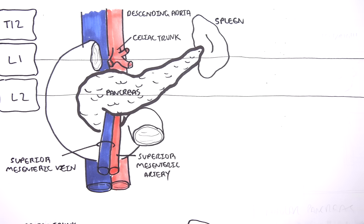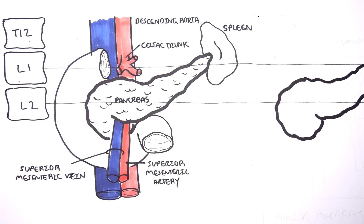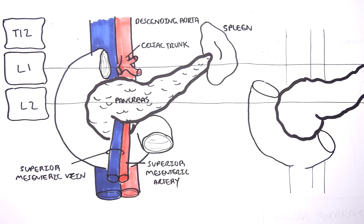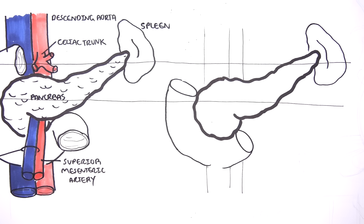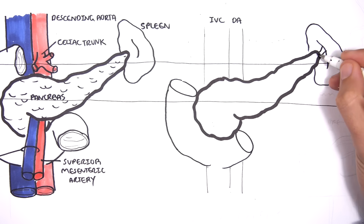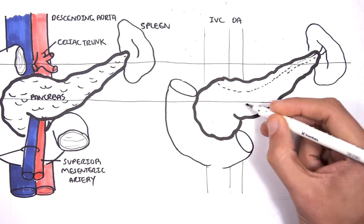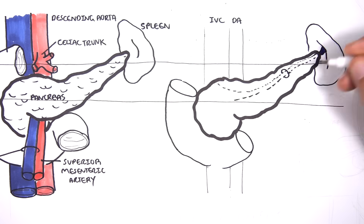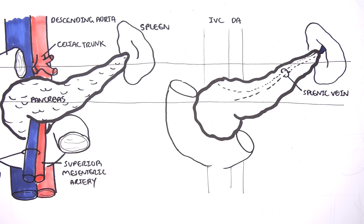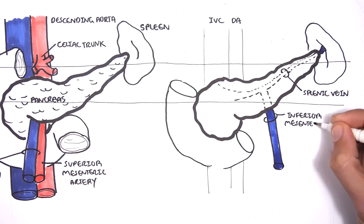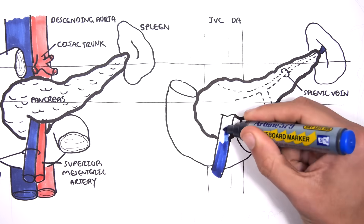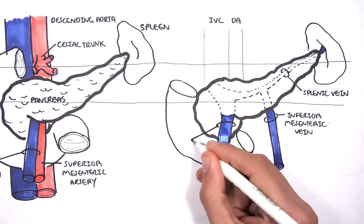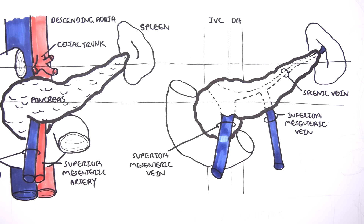Now let's look at the venous drainage of the pancreas. Behind the pancreas lie the inferior vena cava and the descending aorta. Draining from the spleen is the splenic vein, which travels posterior to the pancreas. The inferior mesenteric vein, carrying blood from the hindgut, drains into the splenic vein.